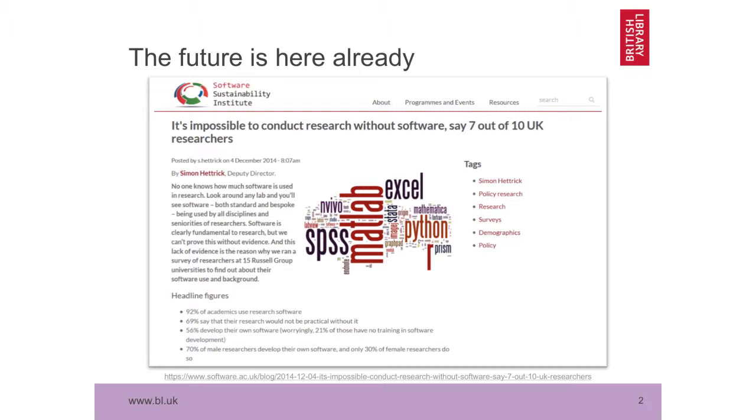What you'll see here — probably not in much detail — is a survey done by the Software Sustainability Institute almost five years ago, where they surveyed researchers from 15 Russell Group universities about their use of software in research. A key point is that five years ago, 92 percent of researchers said they were using research software, which even at the time made me wonder what the other eight percent were doing.